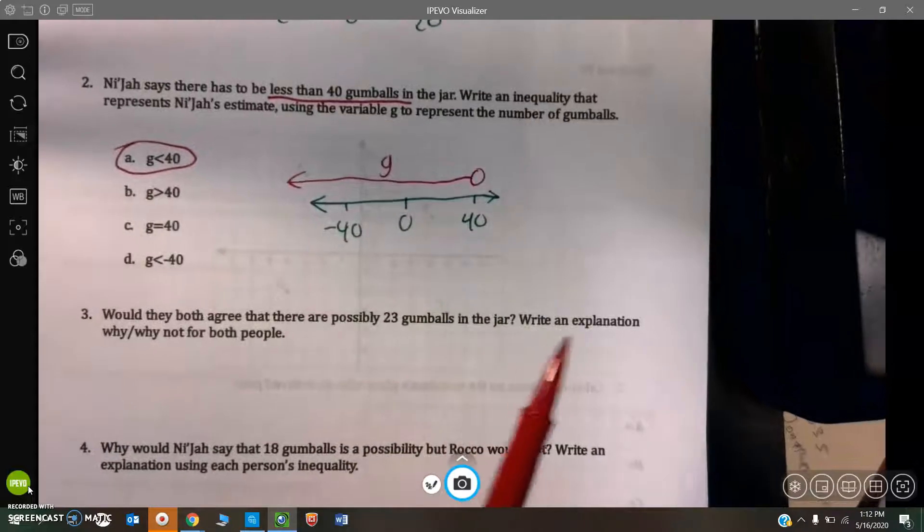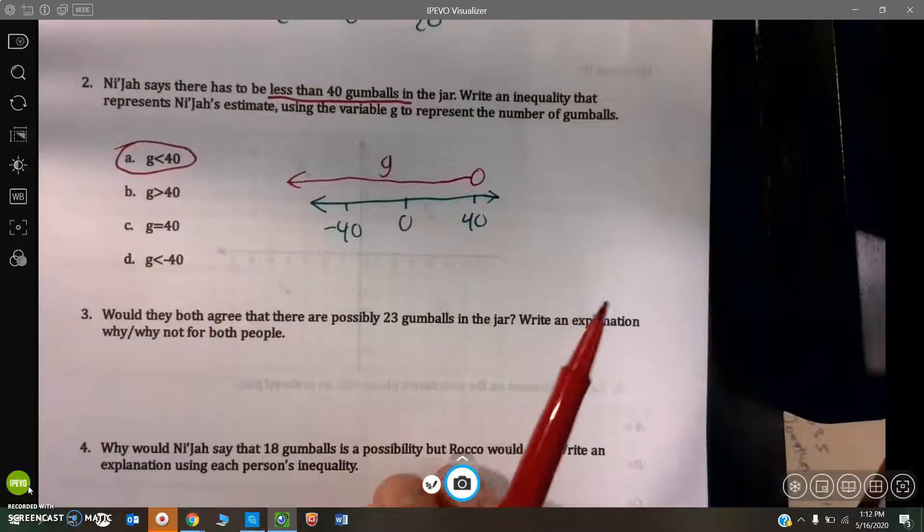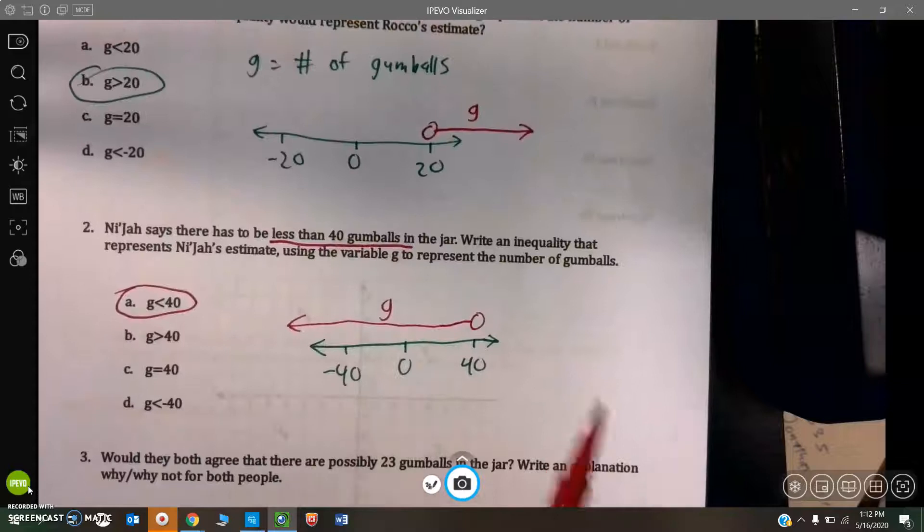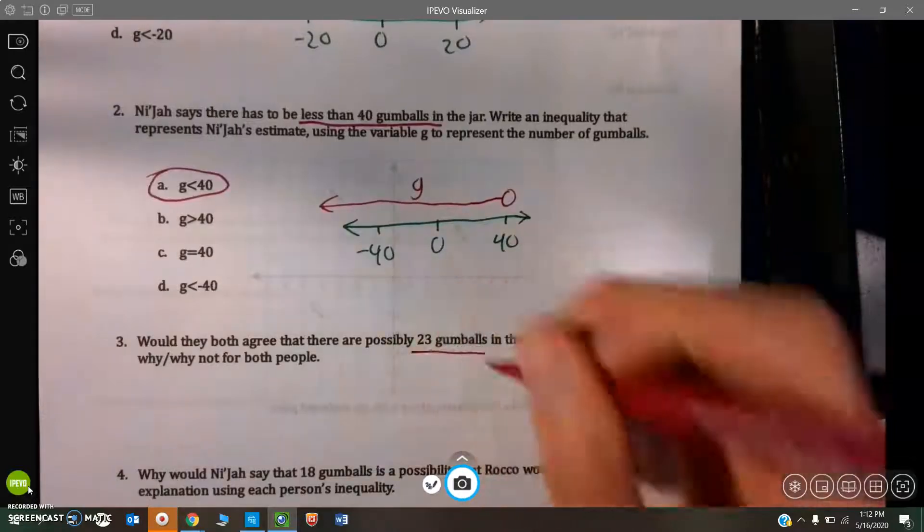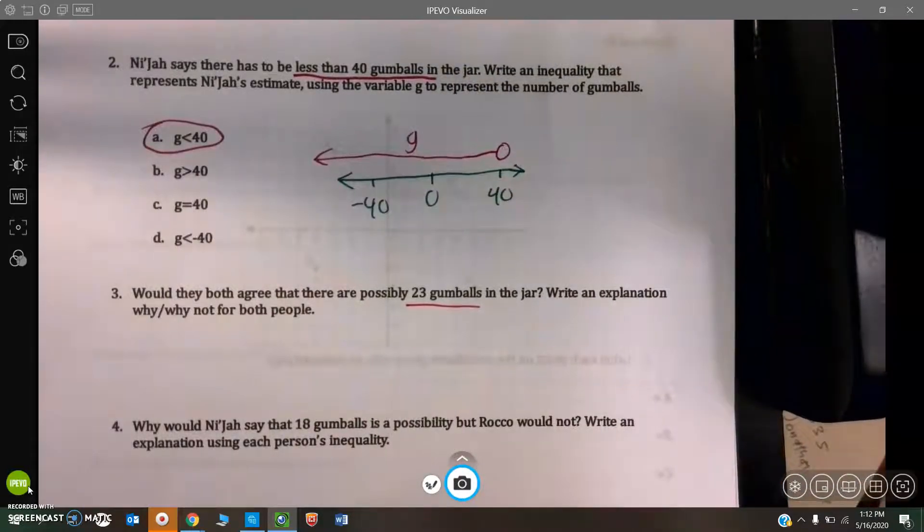Would they both agree that there are possibly 23 gumballs in the jar? Explain why. McHale said it had to be greater than 20, and Niza says it has to be less than 40. And 23 is less than 40 and greater than 20.